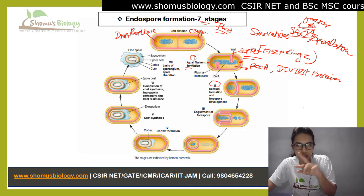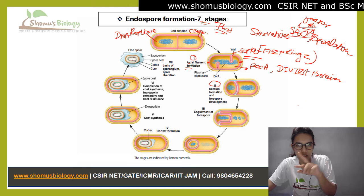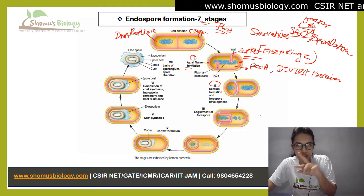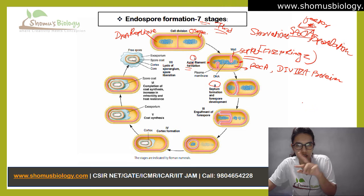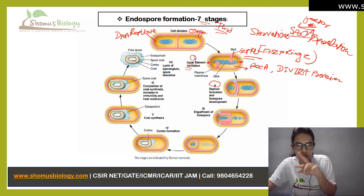This is exactly like phagocytosis — how our immune cells take bacteria inside them. The same kind of process happens here. The mother cell engulfs the forespore, and after that there are two membranes: one belonging to the forespore itself and the second from the mother cell which engulfed it.